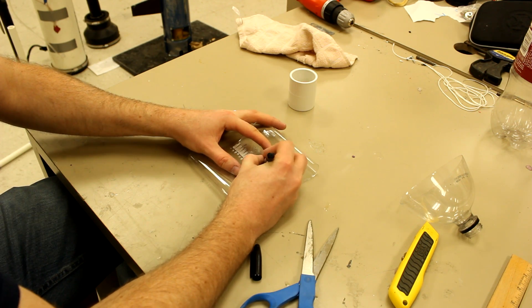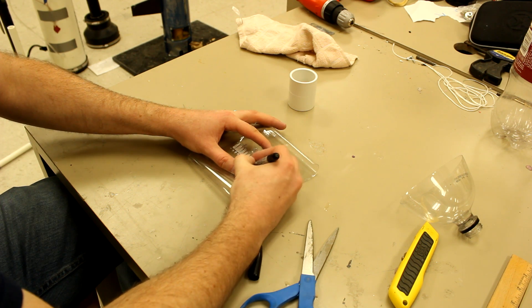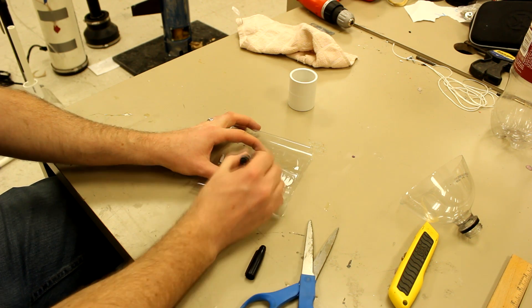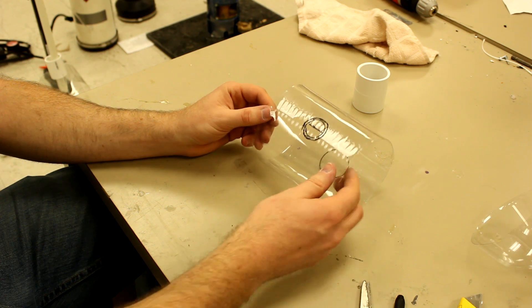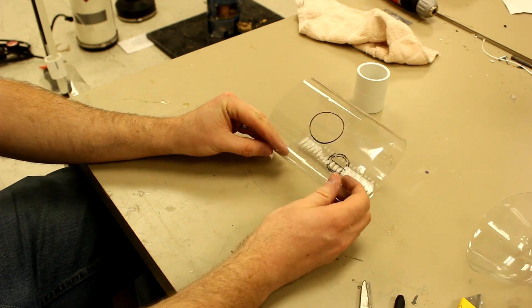Because it's going to need to fit over the zip ties as well. And then, lastly, draw a line down the center. So now we're going to cut out our circles. Start with the top one.